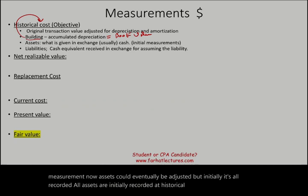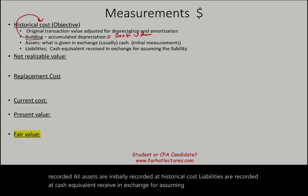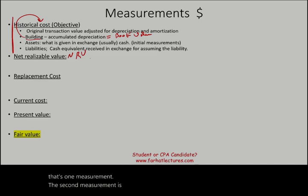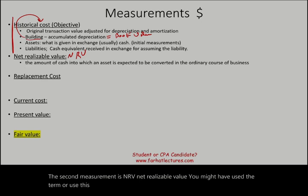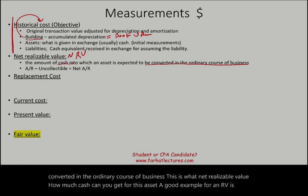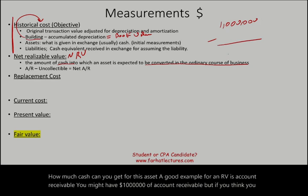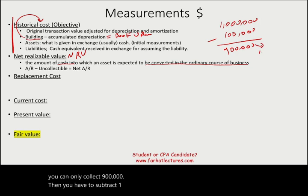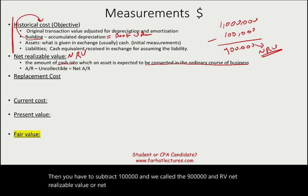The second measurement method is net realizable value, or NRV — the amount of cash the asset is expected to be converted into in the ordinary course of business. A good example is accounts receivable. If you have a million dollars of accounts receivable but expect to collect only $900,000, you subtract $100,000 and report $900,000 as NRV — the net accounts receivable. Net realizable value is the amount of cash you would expect to receive at the end of the day.